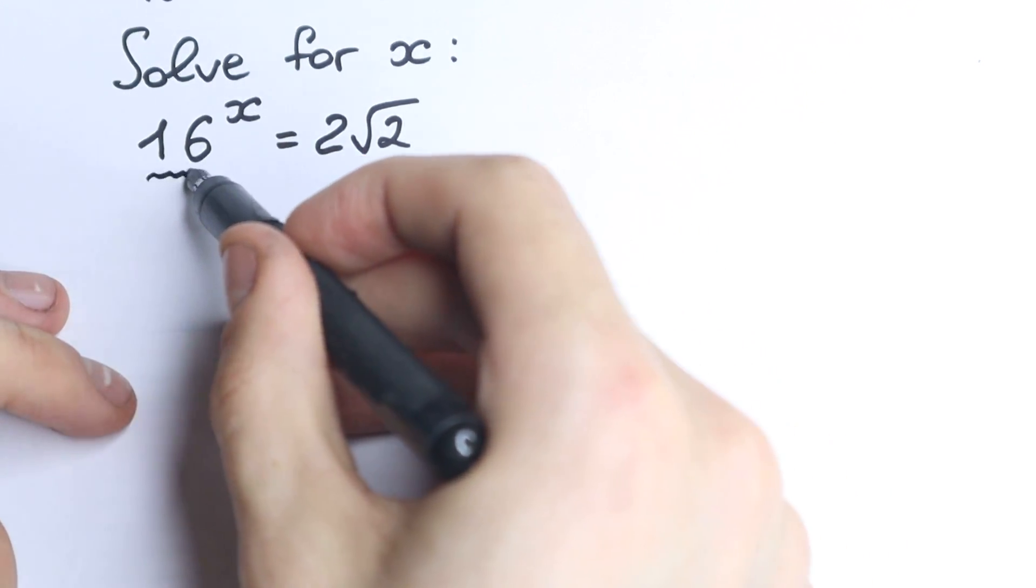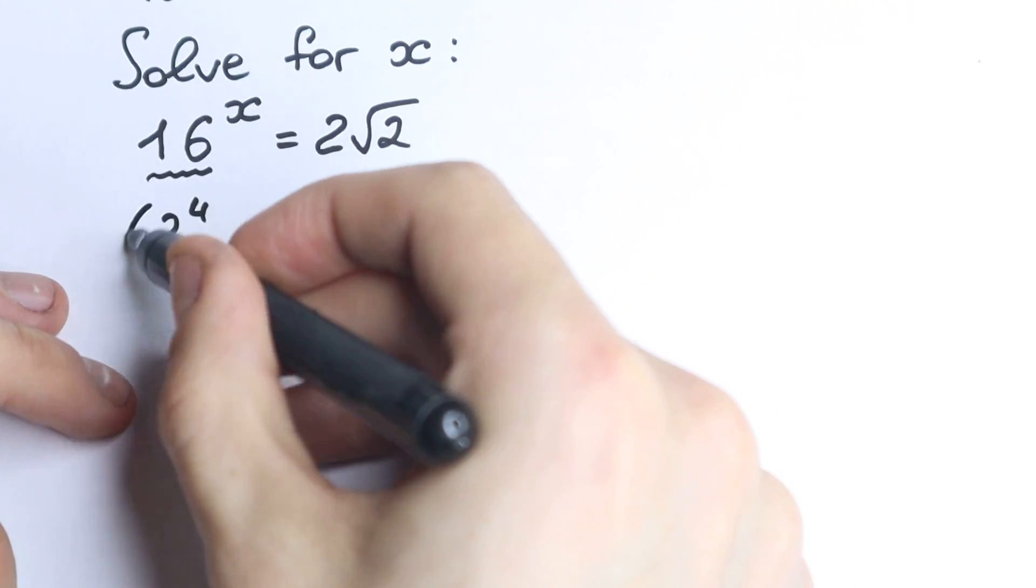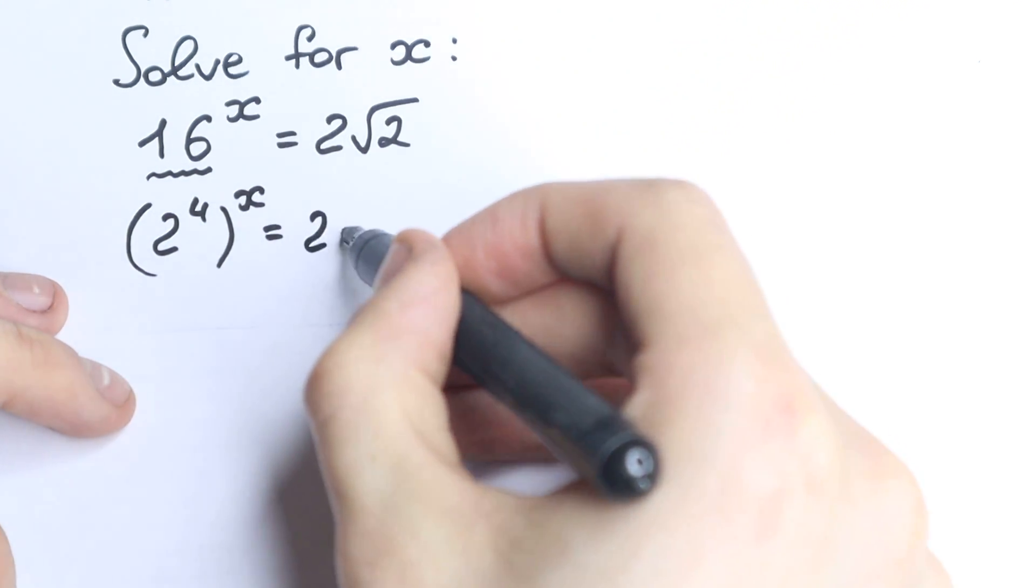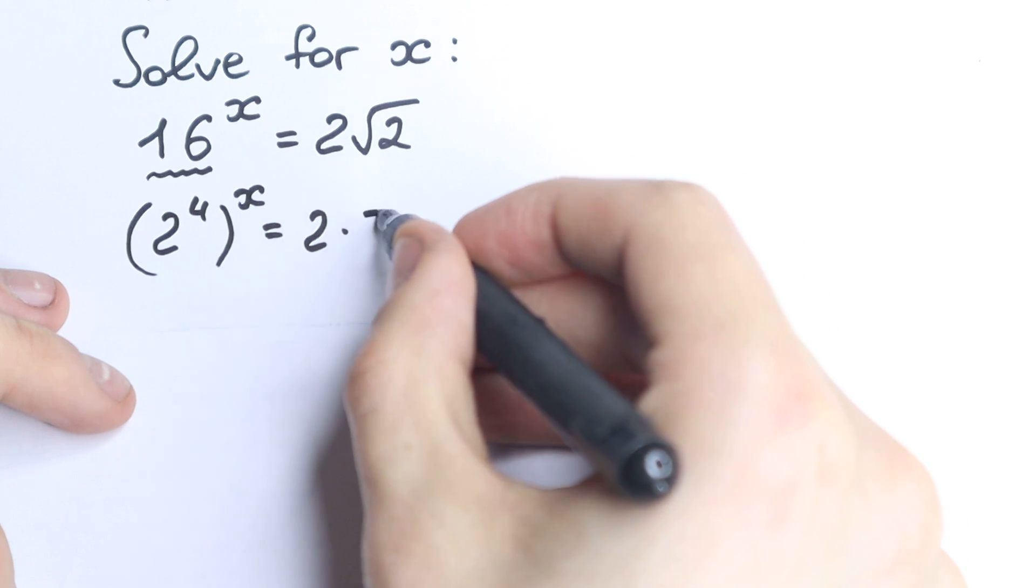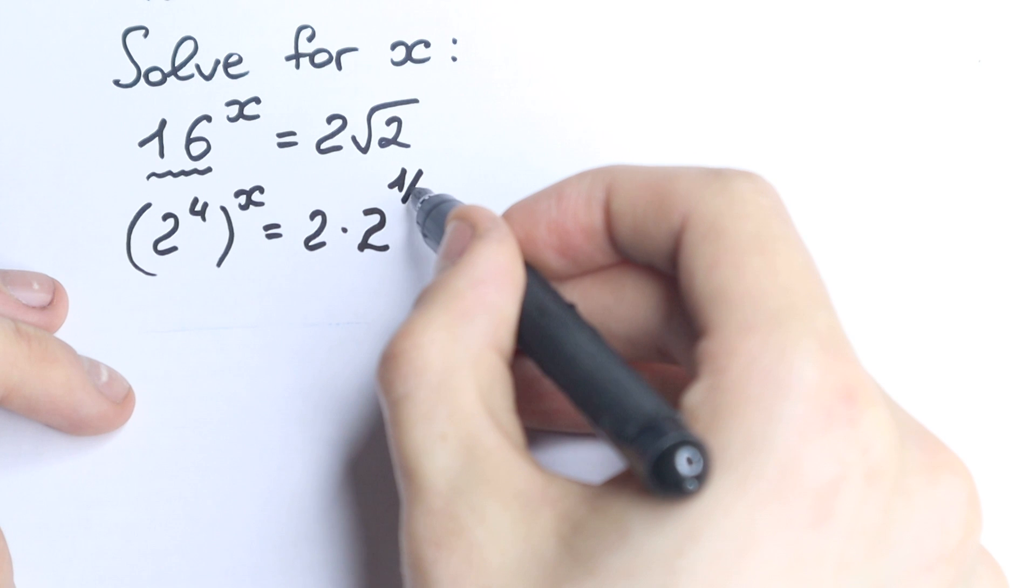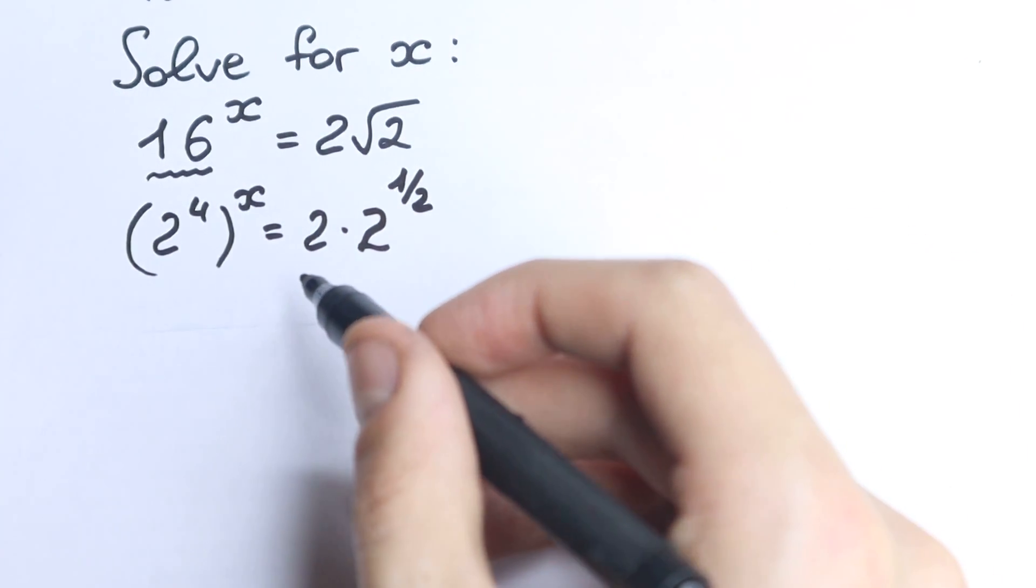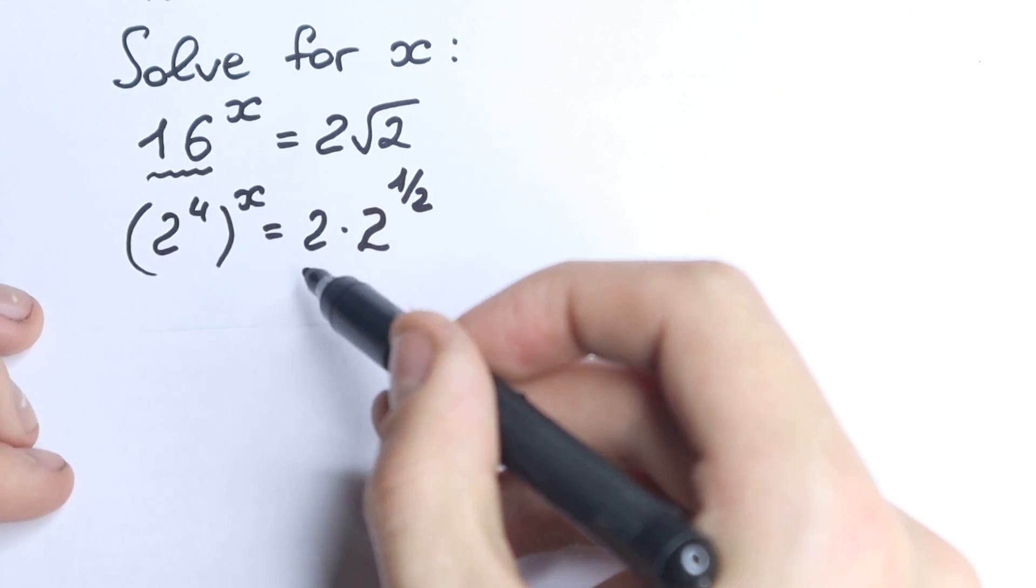So let's write this 16 as 2 to the power 4. So we have 2 to the power 4, and 2 to the power x, equal to 2 times, as I told before, let's write not square root, let's write with the power, so let's write it in a fraction way. So we have 2 to the power 1, 2 to the power 1 half. So we can write it in this way, and it will not be a mistake when we write it in this way. We just express these values in another way.